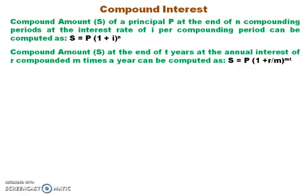When you have quarterly compounding, M equals 4. For semi-annual compounding, M equals 2, and for monthly compounding, M equals 12.